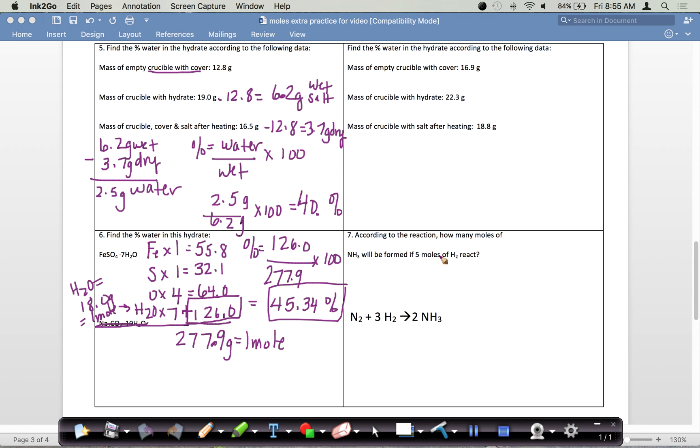If we want to do this question, which is called a mole-mole problem, whenever it says how many moles of something if this many moles of something else, we always put our x over what it asked about. It asked about NH3, so we put an x. It says 5 moles of H2, so I put a 5 over my H2. This sets up a proportion: 5 over 3 equals x over 2. Cross multiply: 3x equals 10, and when we finish that question, we get x equals 3.3 moles.